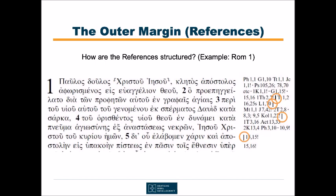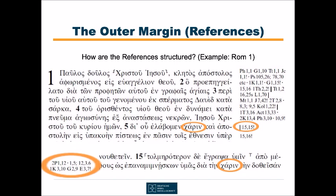Then there are these raised dots. They separate references related to different parts of the same verse. Hence, the first four references in verse 1 all belong together. If you look them up, you will see that the writers of the respective letters call themselves the doulos — a slave of Christ or of God. The references to Psalms behind the dot are then related to the word klētos in verse 1. And what about the exclamation marks? They indicate verses where further references to the same thought or topic will be found. In Romans 15:15, for example, to which the reader is referred in the margin of verse 5, additional references to the topic of God's grace are listed.